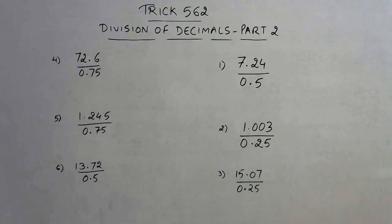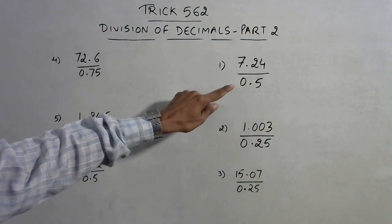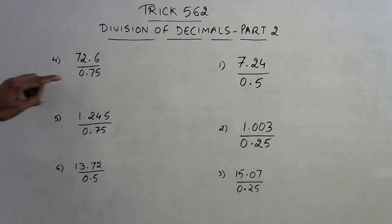And here are six more questions. Now you can see that the denominators I have taken are 0.5, 0.25, and 0.75 - so only three denominators. And believe it or not, division by 0.5, 0.25, 0.75 can be very easy and fundamental only if you know some basic rules of decimals.